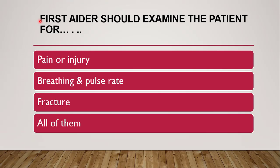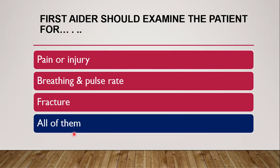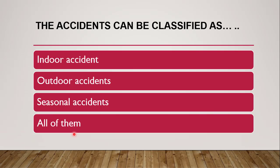Next question: first aider should examine the patient for — pain or injury; breathing and pulse rate; fracture; or all of them? The correct answer is all of them. The first aider should examine the patient first for signs and symptoms of any injury or illness, then check pulse rate, breathing, any bleeding, or fracture and bone injuries.